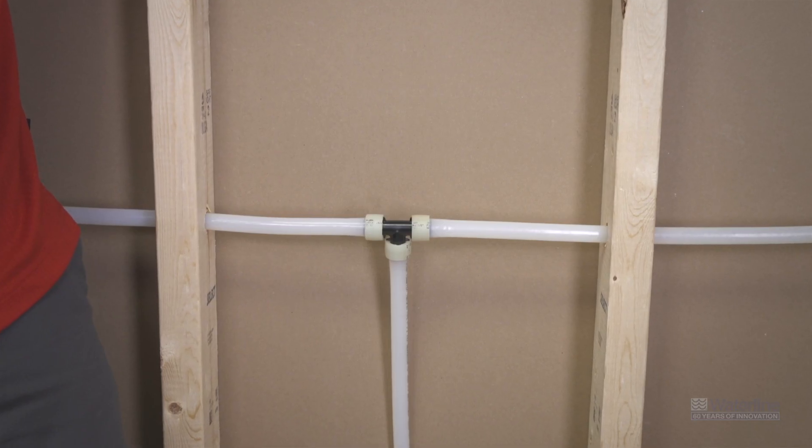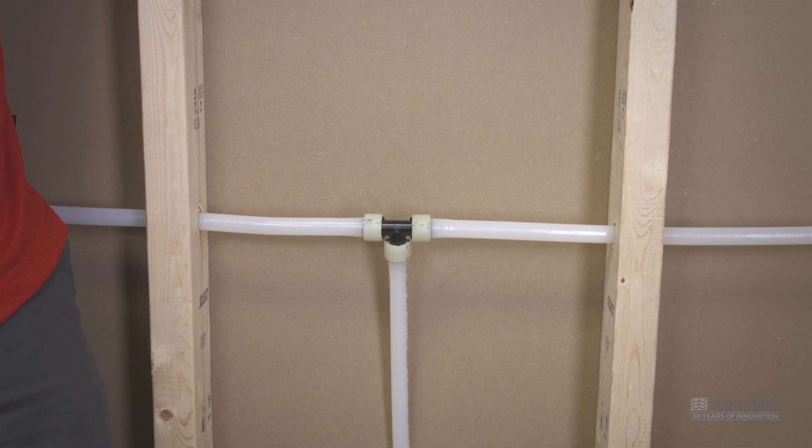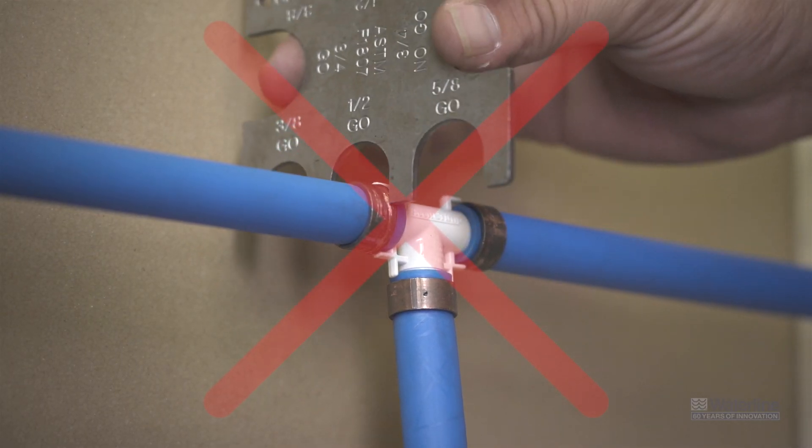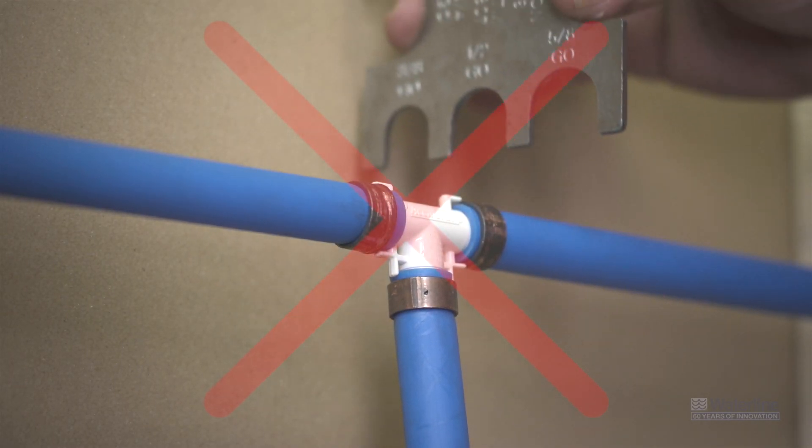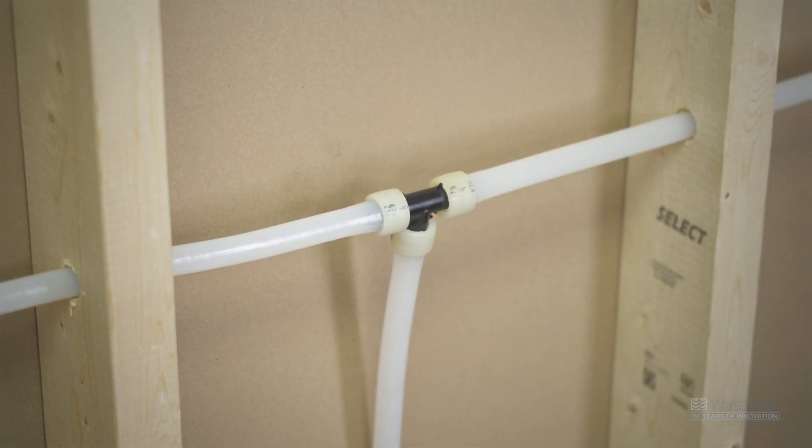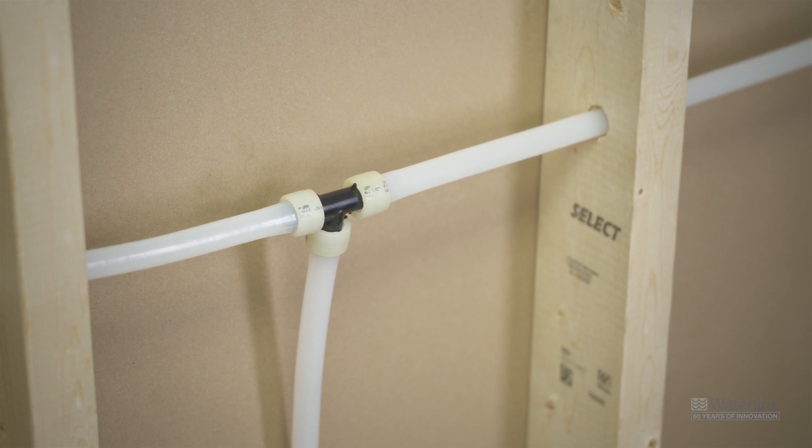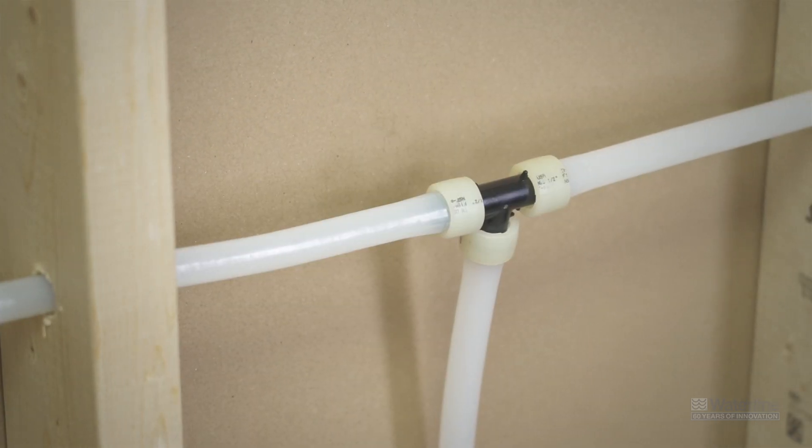Secondly, since the ColdX pipe and rings constantly shrink to the original size, your cold expansion connection actually continues to strengthen over time. Finally, there is no need to use a go no-go gauge since a cold expansion connection is purely visible. So you can tell if the connection has failed or if it was successful simply by seeing if the ring is touching the fitting shoulder.